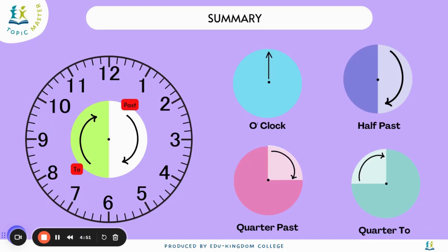In summary, any time when the minute hand is moving from 12 to 6, we use 'past'. And when the hour hand is moving from 6 to 12, we use 'to'. When the minute hand is pointing to 12, it will be o'clock. When it's pointing at 6, it will be half past. When it's pointing to 3, it will be quarter past. And when it's pointing to 9, it will be quarter to.